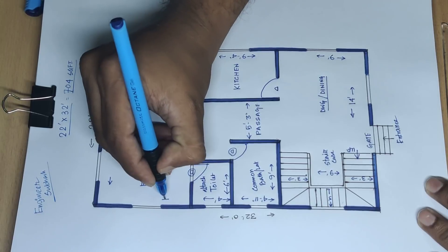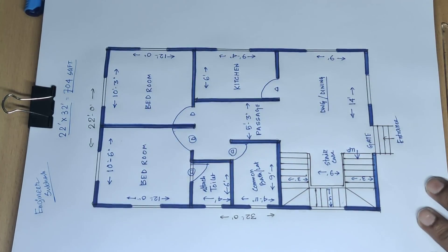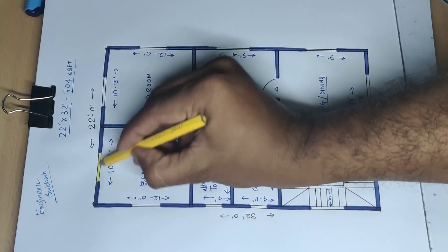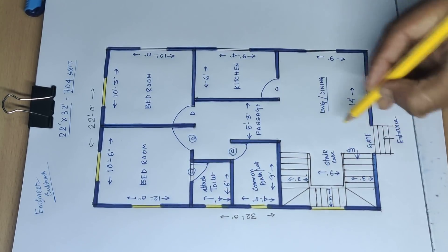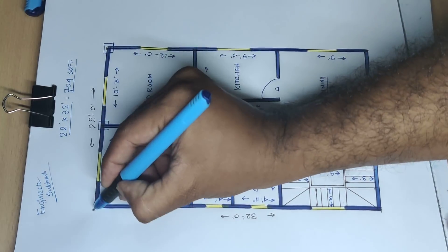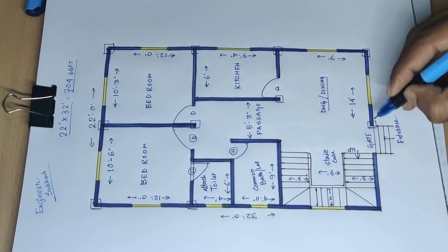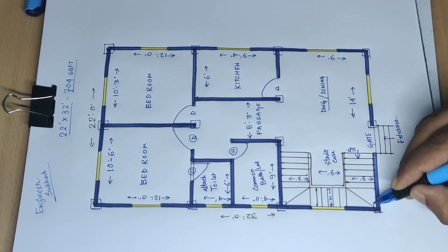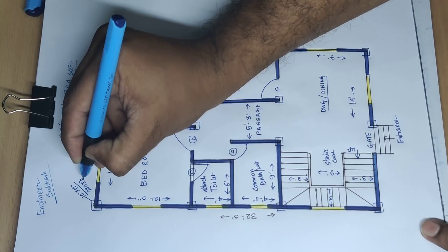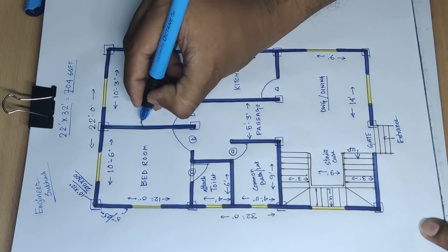This is bedroom — this side length 12 feet and this side 10 feet 6 inch. This is a 2 BHK house plan, 700 square feet. This is window. Next: 1, 2, and 3 column — 1, 2, and 3 — 6 numbers of columns. Column size: 10 inch by 12 inch, 250 by 300 mm. Outside wall 5 inch, 125 mm; inside wall 5 inch.